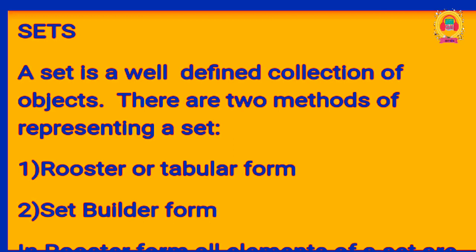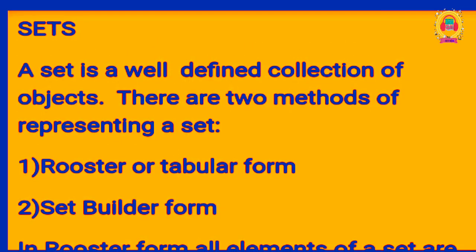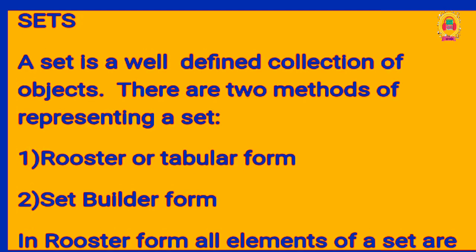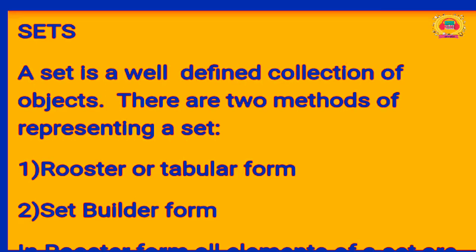So, what does well-defined mean? What is a collection of well-defined objects? For example, 'beautiful flower of the garden' — this is not well-defined, because 'beautiful' is a subjective word. Different people make different choices, so this would not be a well-defined object.